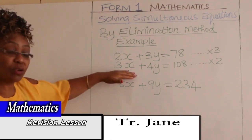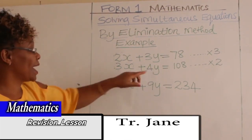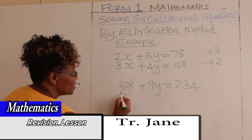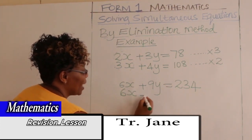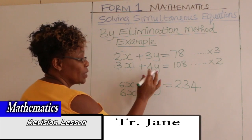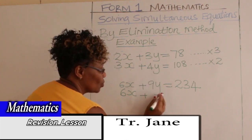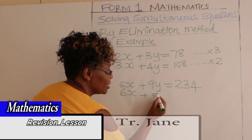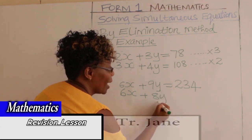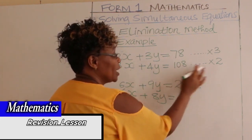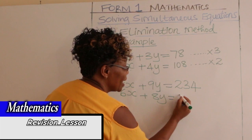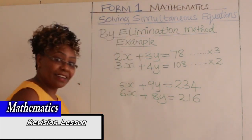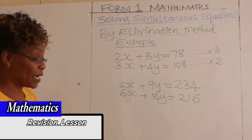For the second equation, multiplying by 2: 3x times 2 gives 6x, plus 4y times 2 gives 8y, and 108 times 2 gives 216. So the new second equation is 6x plus 8y equals 216.